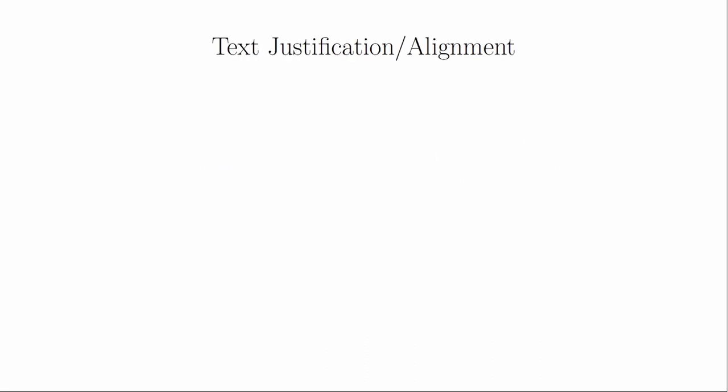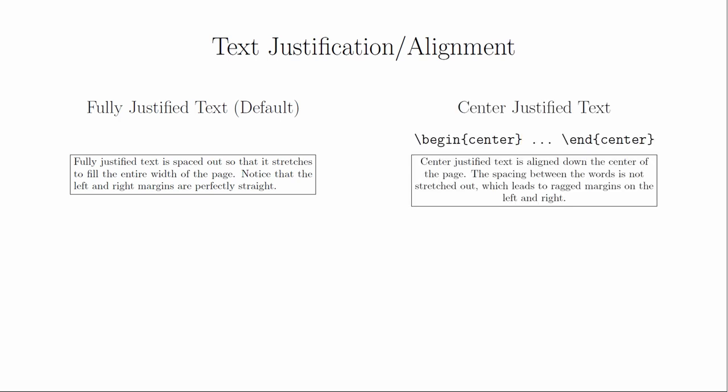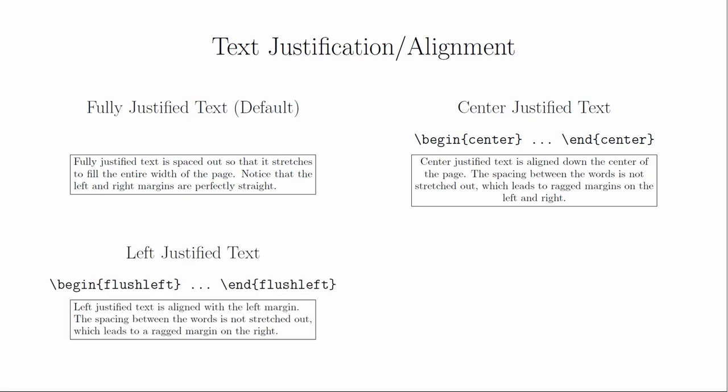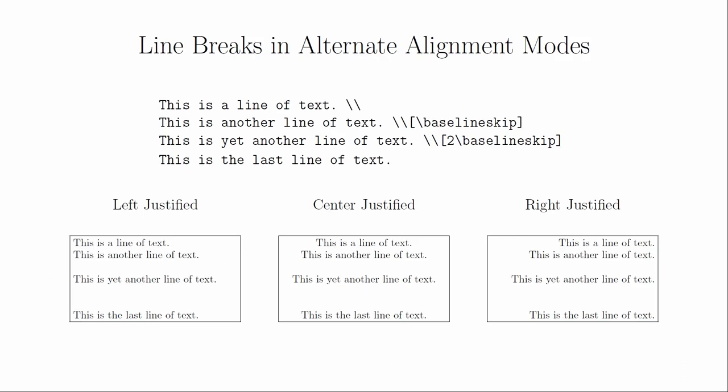The next type of text modifier that most people look for is alignment. The default behavior of LaTeX is to stretch the text so that it fills the entire space between the margins — this is sometimes called full justification. To center the text, put it between a begin center and end center. To left justify text, put it between begin flush left and end flush left. To right justify text, put it between begin flush right and end flush right. When you're in these alternate alignment modes, you can use a double backslash to start a new line. You can add extra spacing by putting in a measurement inside of square brackets immediately after the double backslash.